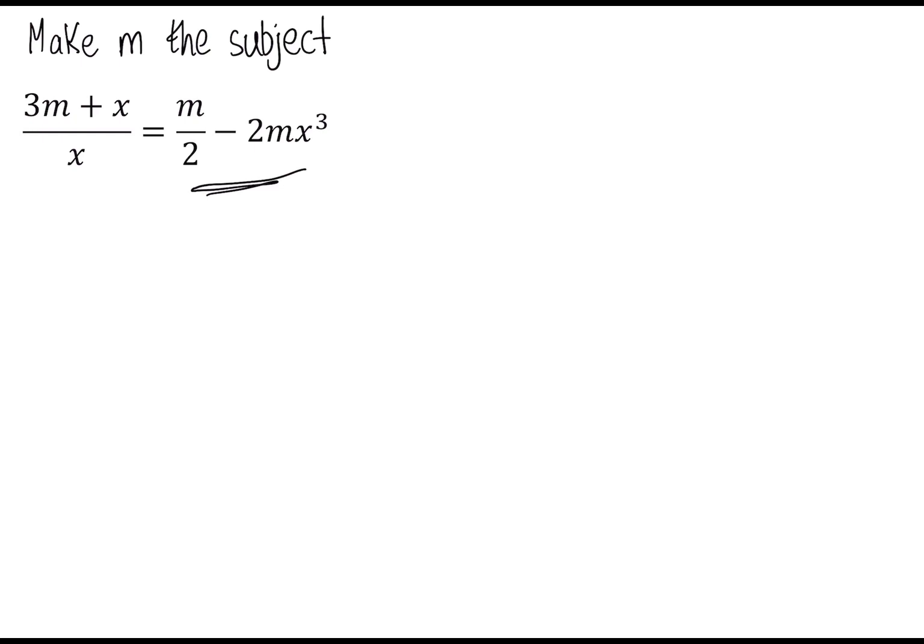This should make it simpler. So we have 3m plus x over x is equal to m over 2 minus, now we want this to be over 2 as well, so we can subtract it. So we're going to multiply top and bottom by 2, 4m x cubed over 2. So now we have 3m plus x over x is equal to m minus 4m x cubed over 2. So now we can simplify this a bit.